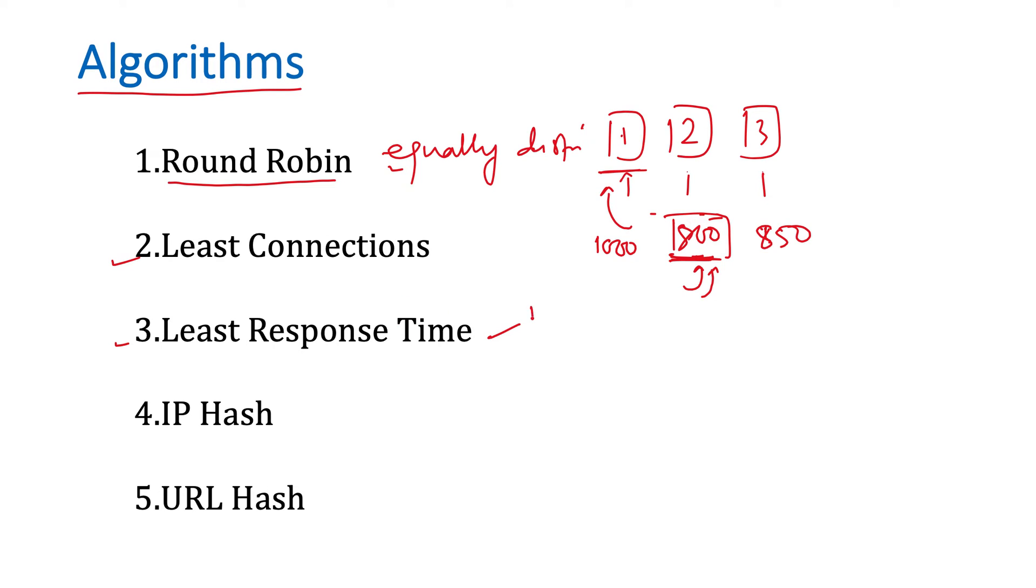Third is least response time. It may depend on factors like the number of requests being served by that system and the power of the system, the configuration of the machine. If we have a high-end machine, it will be able to serve more requests compared to lower-end machines. If the response time is very low, meaning it's serving requests very fast, then it can handle more requests. So we can route more requests to that server.